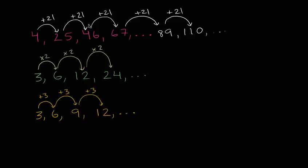But here we figured it out. In this first set of numbers, we just add 21 every time. This one we multiply by two every time. This one we add three every time.